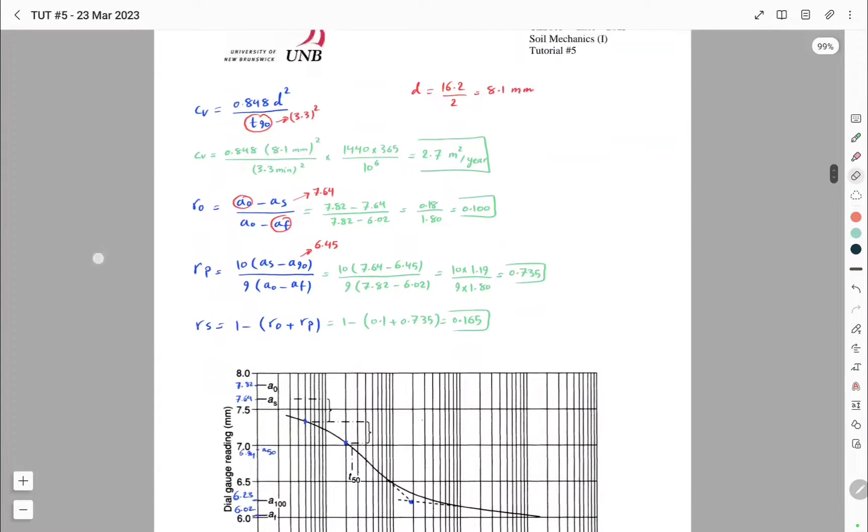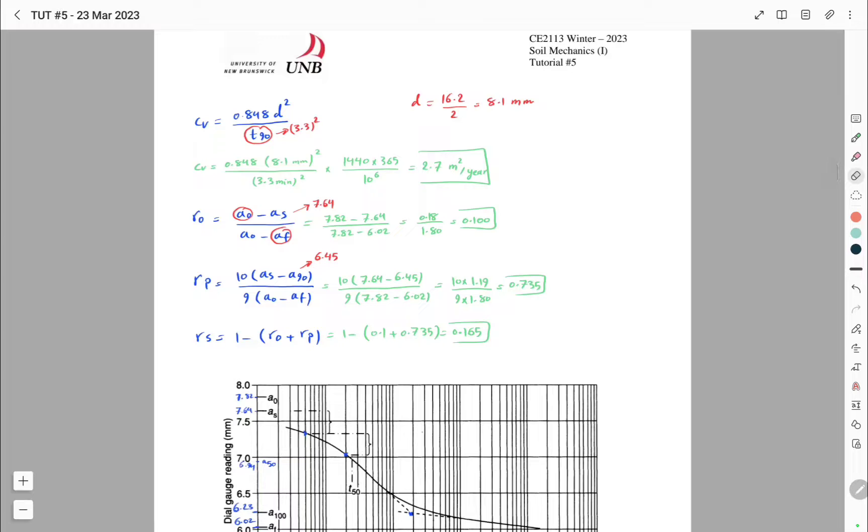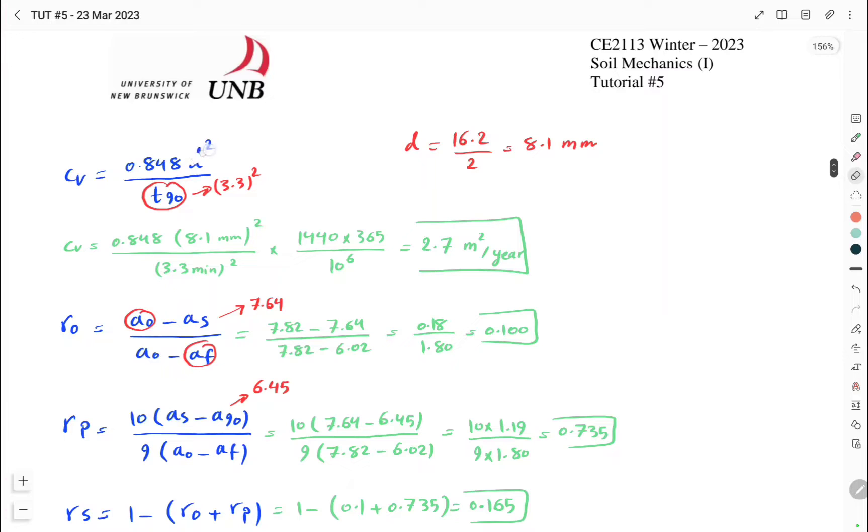In the log time method, the equation of CV is different and we don't need to determine T90, but instead we have to determine T50. The coefficient is a little bit different, so I'm just going to write the new equation: it's 0.196 times d to the power of 2 divided by T50.